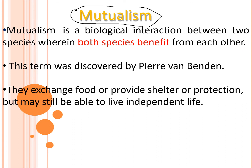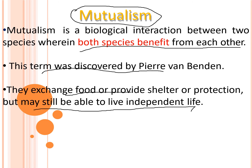Mutualism, or symbiosis, is a biological interaction between two species wherein both species benefit from each other. This term was discovered by Piraeva and Bentana. The organisms exchange food or provide shelter and protection, and they may still be able to live independent lives. Both organisms are benefited equally — this is a huge plus point under positive interactions.